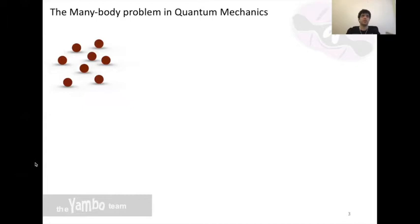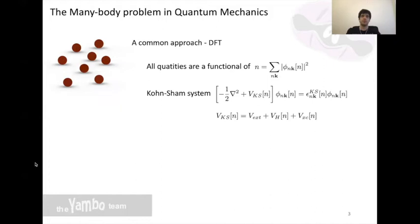A commonly used approach is Kohn-Sham density functional theory. In this framework, we switch from the main object being the all-electron wave function to the electron density. All quantities are assumed to be a function of the ground state density, so if you know it, you can compute whatever ground state property you need.